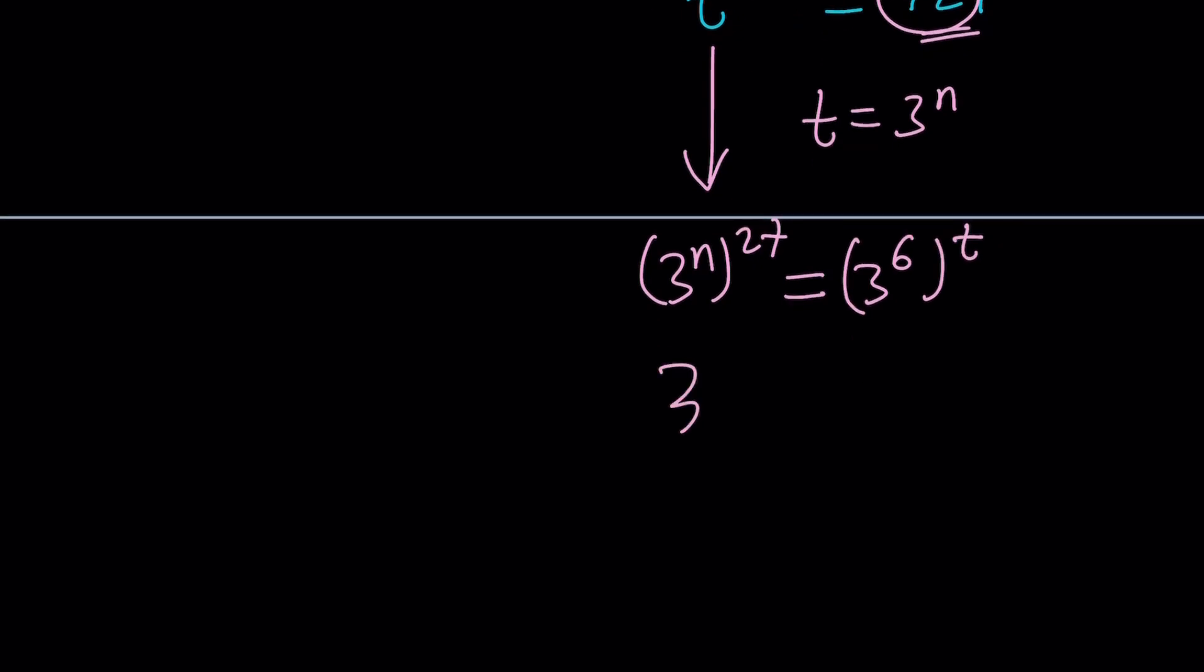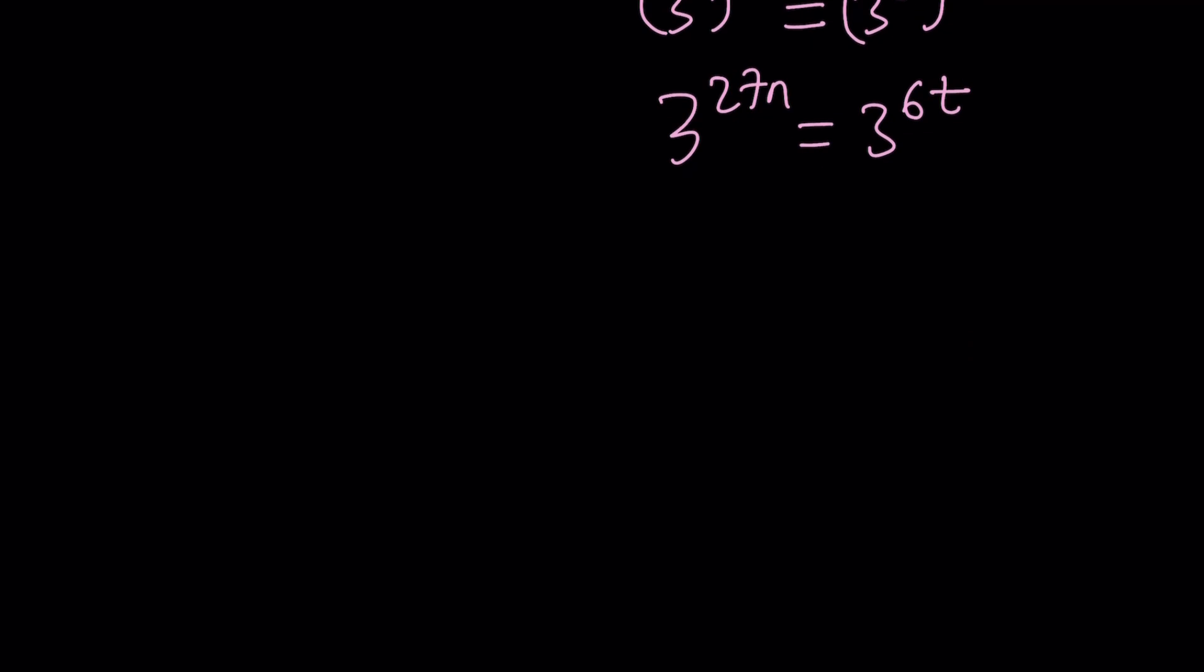This gives me 3 to the power of 27n equals 3 to the power of 6t. So 27n is the same thing as 6t. 27n equals 6t. Divide by 3, you get 9n equals 2t. This is nice and this is where the divisibility comes in. If you're looking for integer solutions, obviously you want n to be a 2 or any multiple of 2. At the same time, keep in mind that you want t to be a power of 3.